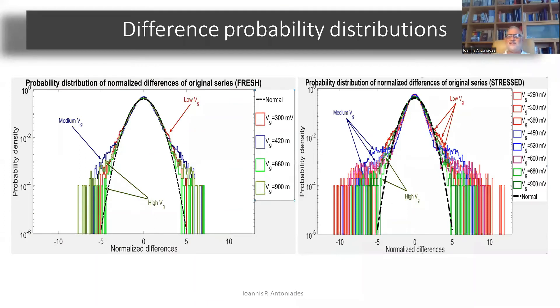But here in this study, we try to do the same by applying complex network time series analysis and in particular visibility graphs. Here, I show you the distributions of the normalized differences of the original time series from a fresh and a stressed transistor. The black line is the Gaussian fit. So you can see already from the distributions of the difference that you have a departure from Gaussian behavior. And you have some fat tails, which is proof of the existence of chaotic dynamics.